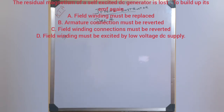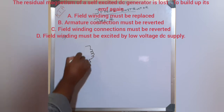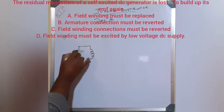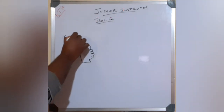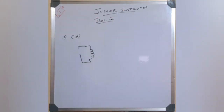By applying a low voltage DC supply on the field winding, we can re-establish the magnetic field. Since it is a self-excited machine, once the field winding gets a DC supply, the EMF will build up again. Therefore, option D — field winding must be excited by a low-voltage DC source — is correct.